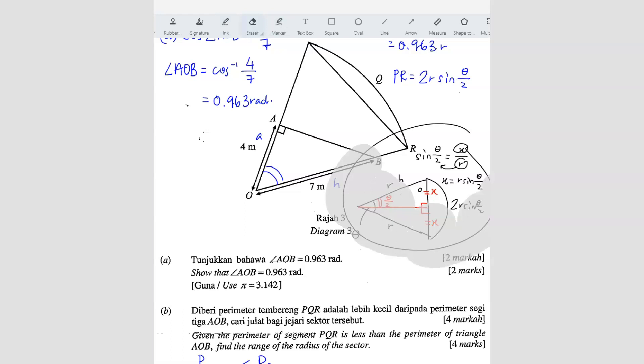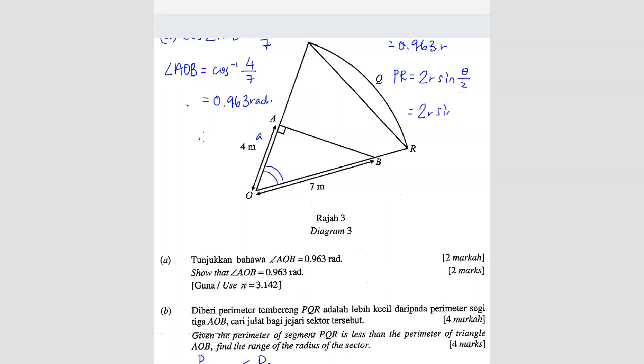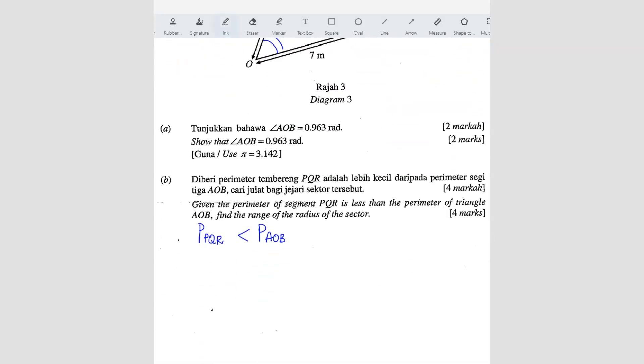So here, we want to use this formula. It's equals to 2R sine, the theta is 0.963 over 2. So we're going to write this in our equation. We know that the perimeter of PQR is equivalent to 0.963R - that is the arc - plus 2R sine 0.963 over 2, and this is less than the perimeter of AOB.